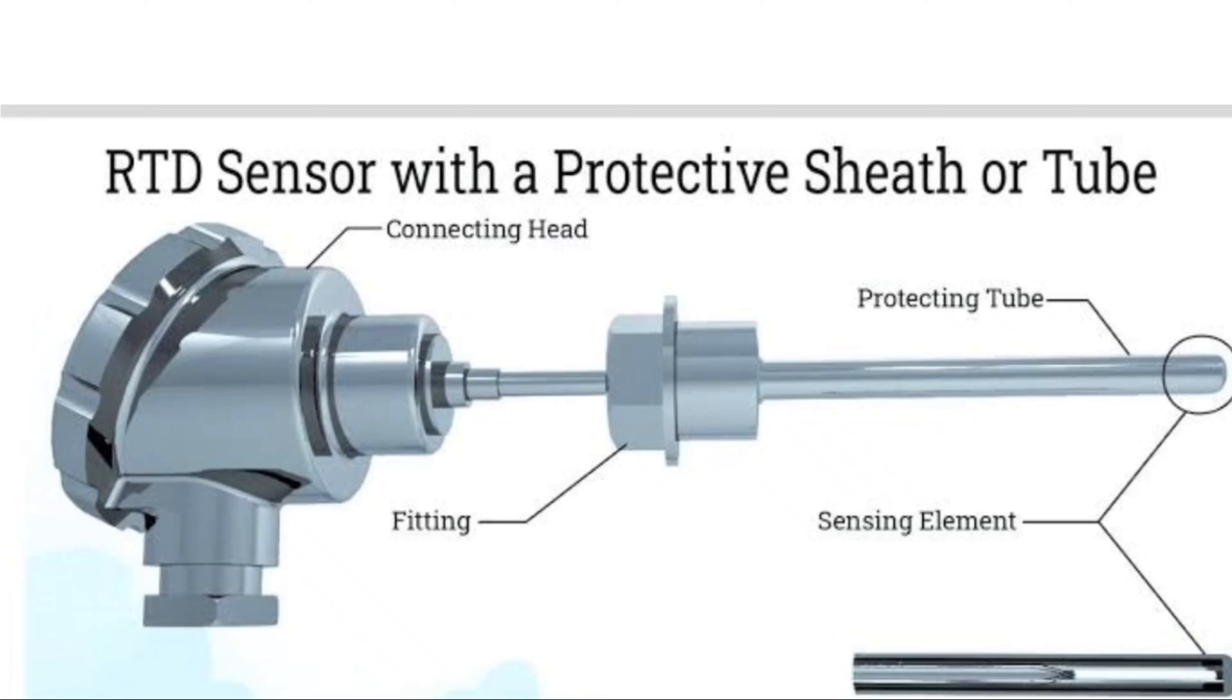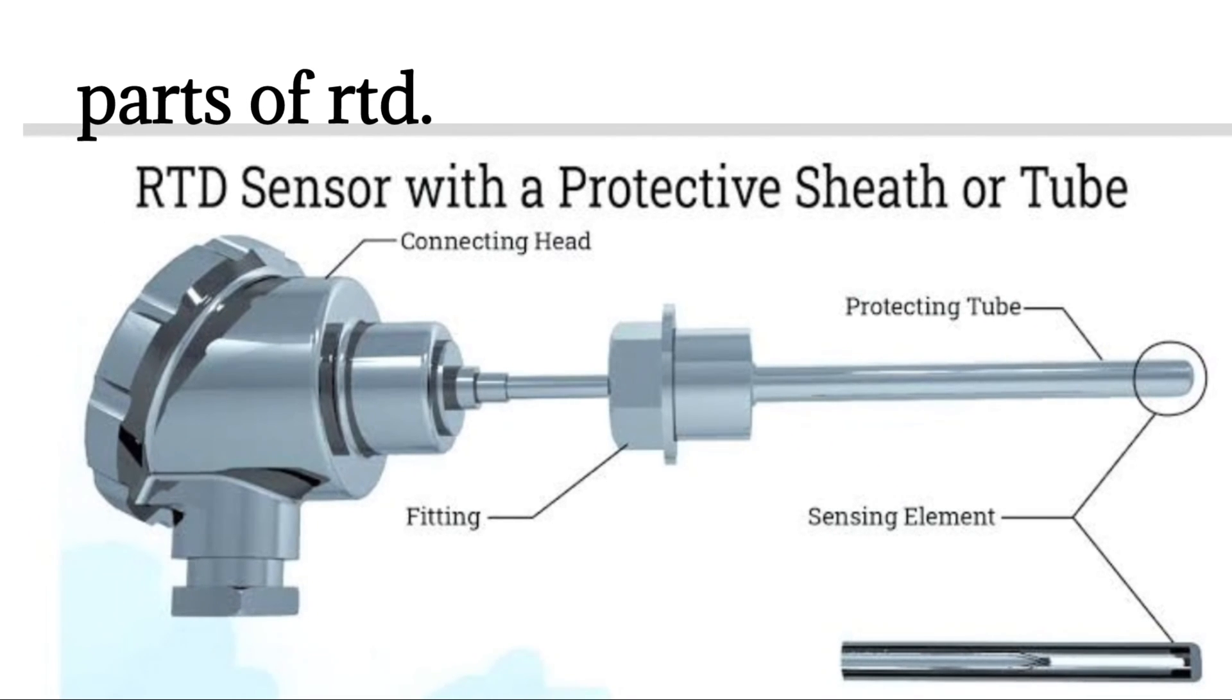Parts of an RTD. Sensing element or RTD element. The sensing element is the actual temperature sensing unit which is located at the tip of the temperature sensor on the end that is exposed to the process temperature.